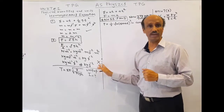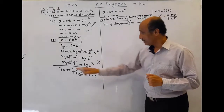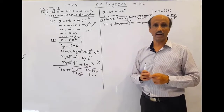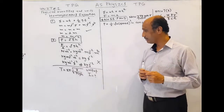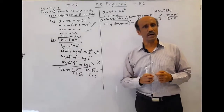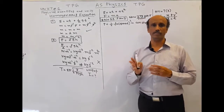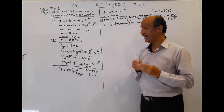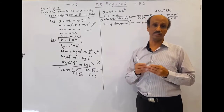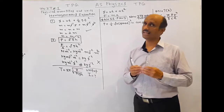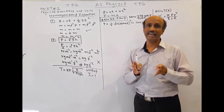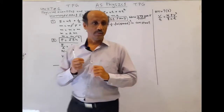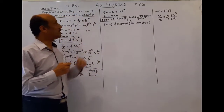Now here is a question you are required to solve: T = 2π√(I/mgh). You are required to find the unit of I. Solve that and write the unit in the comments. Here m is the mass, g is acceleration due to gravity, and h is height.